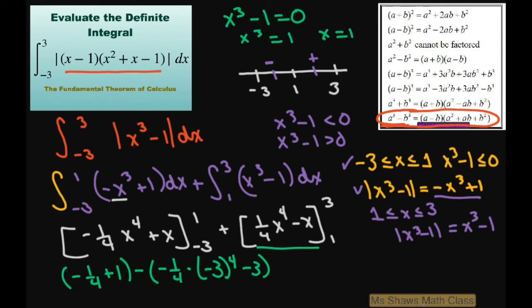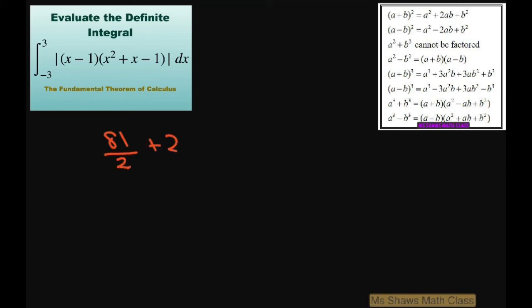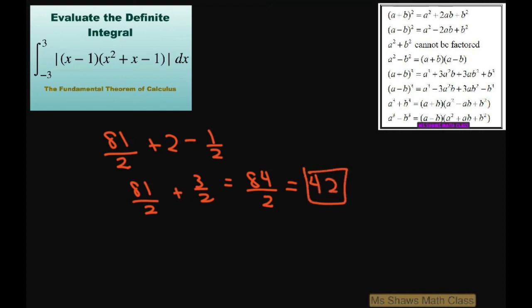And the second integral gives us one-fourth times three to the fourth minus three, minus one-fourth minus one. Adding everything up, you get 81 divided by two plus two minus one-half. So that's 81 over two and four-halves, giving three-halves, which gives 84 divided by two. And that equals 42. And that's your final answer. Thank you, have a nice day.